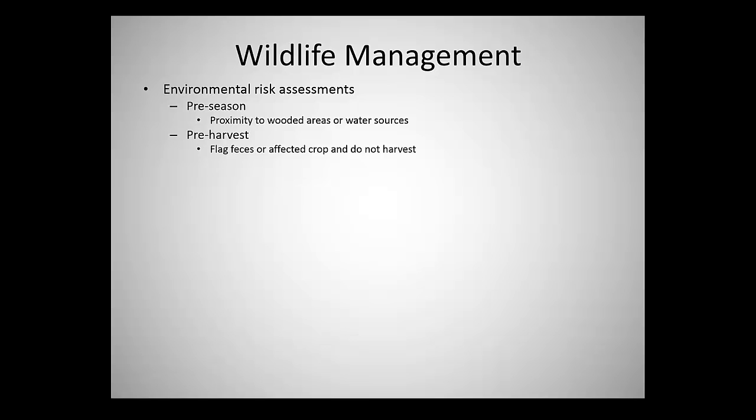You should conduct an environmental risk assessment: pre-season, check whether you're near wooded areas or water sources that attract wildlife. Pre-harvest, walk the field and look for any feces or affected crops — do not harvest contaminated areas; flag them and move on. Monitor for animal intrusion during the growth and harvest periods using appropriate logs and forms.